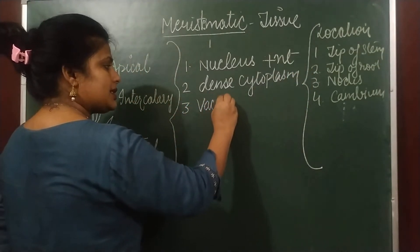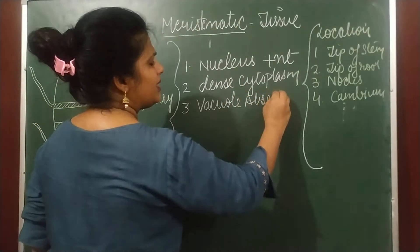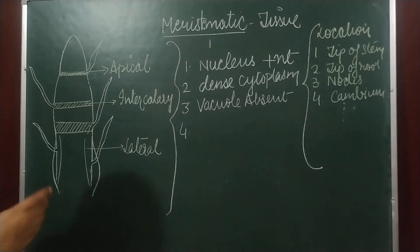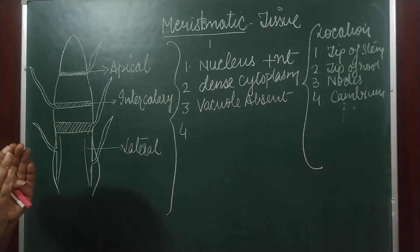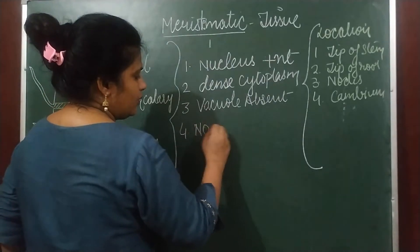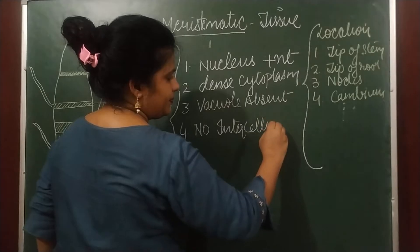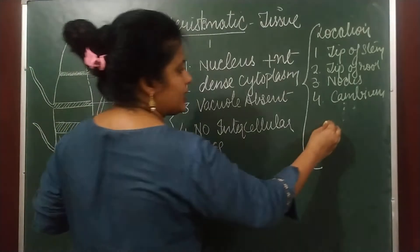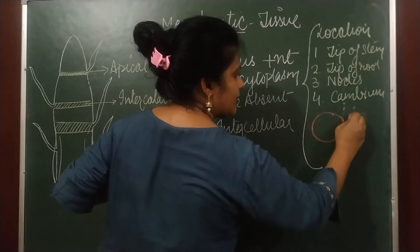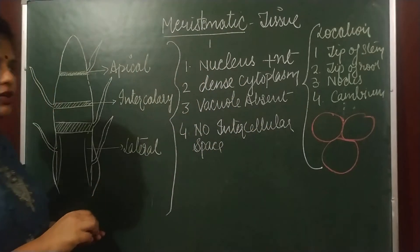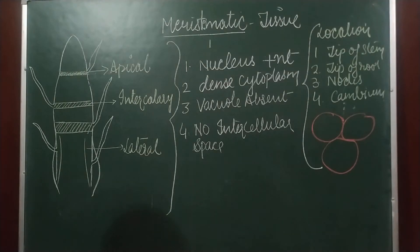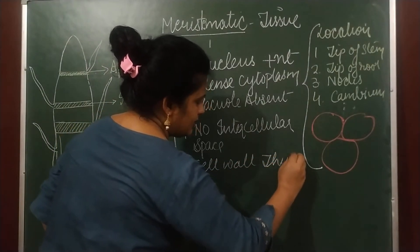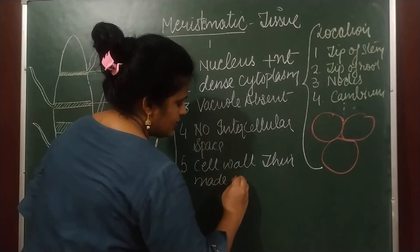Since cytoplasm is very dense and nucleus is big, vacuoles are either absent or present in very small size or very less in number. Intercellular spaces are absent because the cells are very compactly arranged — no intercellular space. Cell wall is thin and made up of cellulose.